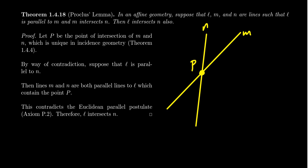We claim that this point of intersection is unique — this is a theorem of incidence geometry. We know that L and M are parallel. Let's add L to our diagram. So we know that L and M are parallel, but N and M intersect at the point P. We need to prove that L and N intersect each other.